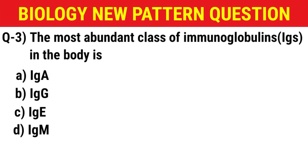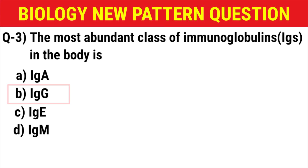Next question: The most abundant class of immunoglobulins in the body is — (A) IgA, (B) IgG, (C) IgE, (D) IgM. The correct answer is option B: IgG.